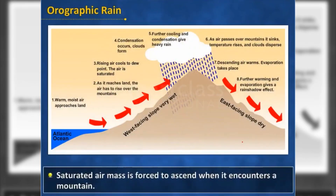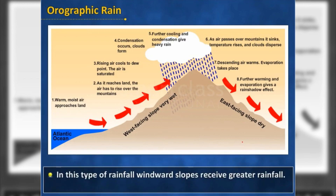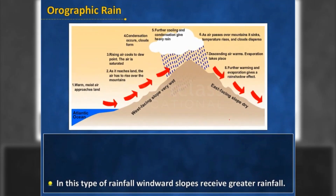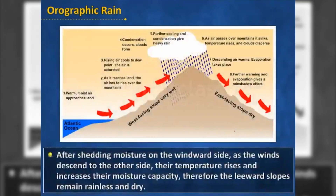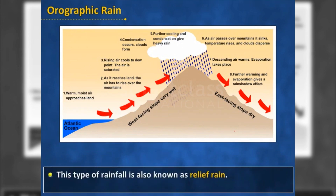Orographic rain: saturated air masses are forced to ascend when they encounter a mountain. As the air rises, it expands and the temperature falls, and the moisture is condensed. In this type of rainfall, the windward slope receives greater rainfall. After shedding moisture on the windward side, as the winds descend to the other side, the temperature rises and increases their moisture capacity. Therefore, the leeward slopes remain rainless and dry. The area situated on the leeward side which gets less rainfall is known as the rain shadow area. This type of rainfall is also known as relief rain.